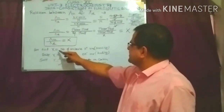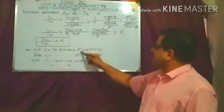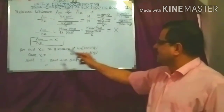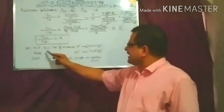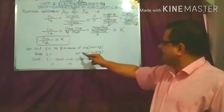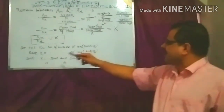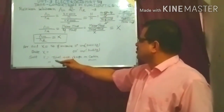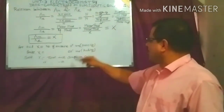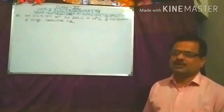Here, for an acid, x equals the number of ionizable hydrogen ions, called basicity. For a base, x equals the number of ionizable hydroxide ions, called acidity. For a salt, x equals the total positive charge on the cation or total negative charge on the anion.